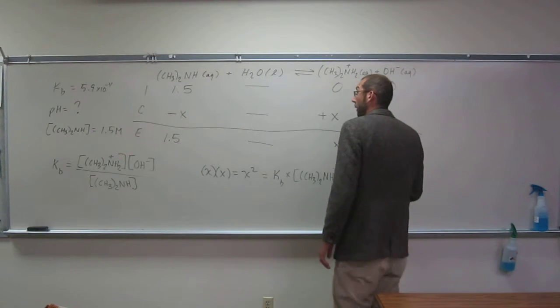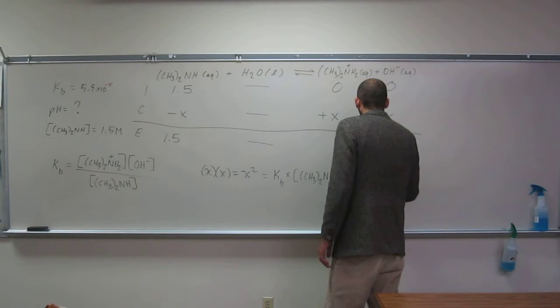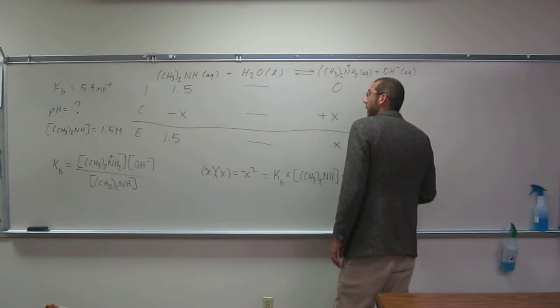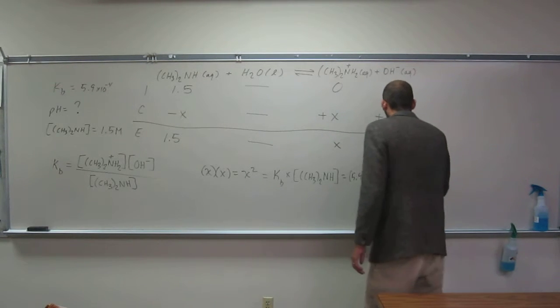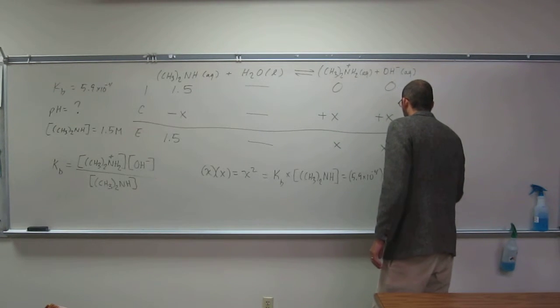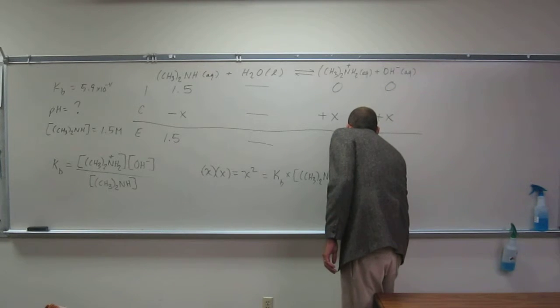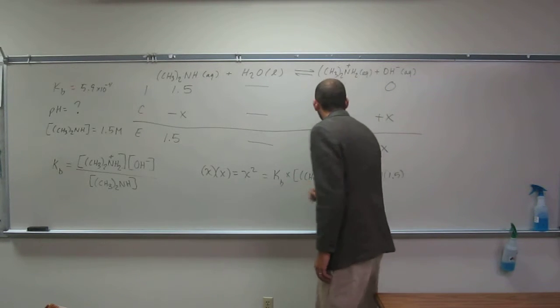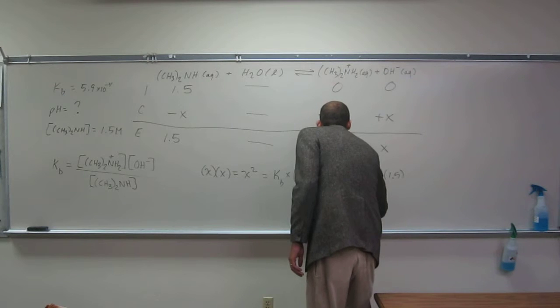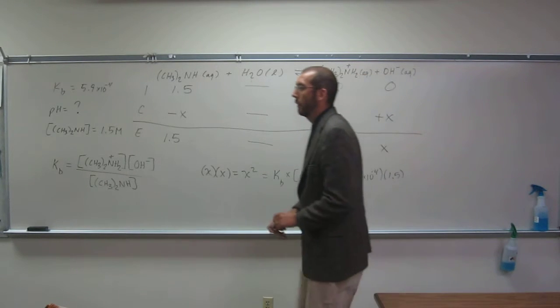That equals Kb times the concentration of dimethylamine. So x equals 2.5 plus x equals 4, because that's 1.5. And then so x is going to be the square root of that thing, okay?